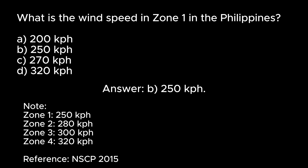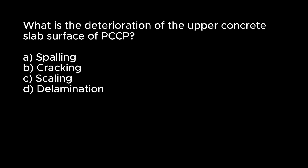Reference: NSCP 2015. What is the deterioration of the upper concrete slab surface of PCCP? A. Spalling. B. Cracking. C. Scaling. D. Delamination. Answer: C. Scaling.